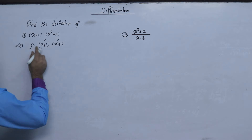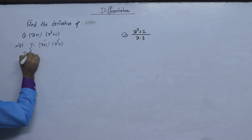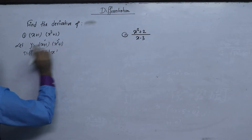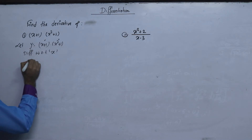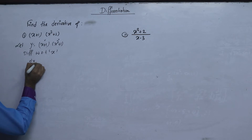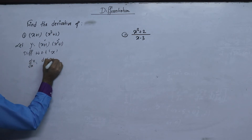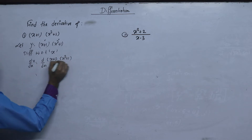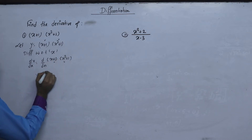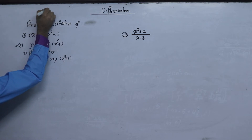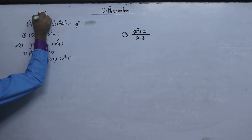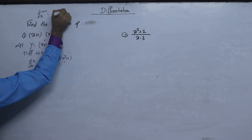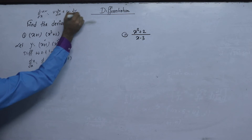Now, differentiating with respect to x, we will find the difference of y with respect to x. We will do x plus 1 into x squared plus 1. We will find the difference of u and v with respect to x: v times du/dx plus u times dv/dx.